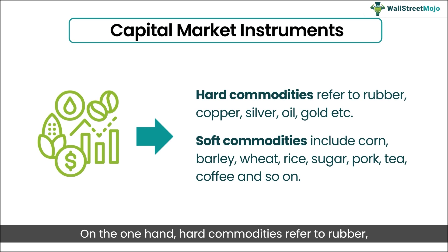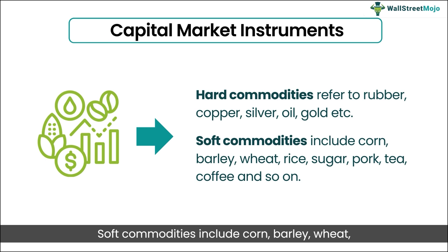Hard commodities refer to rubber, copper, silver, oil, gold, etc. Soft commodities include corn, barley, wheat, rice, sugar, pork, tea, coffee, and so on.